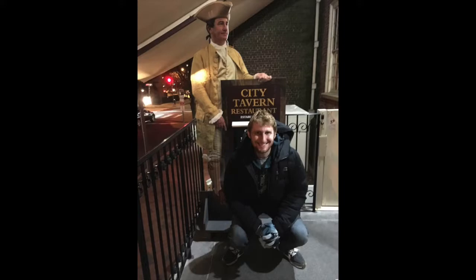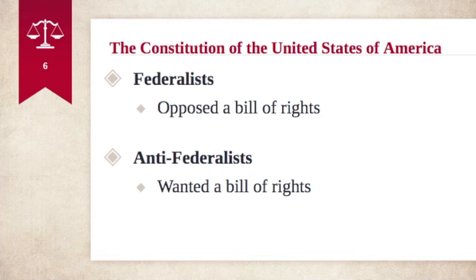The Constitution was a major accomplishment; however, there were two things that it lacked that created a heated debate lasting for several years after the Constitution was originally written. The Constitution lacked specific guarantees of personal liberty, and it also lacked specific limits on government power. This created a very tense debate between two different groups. One of those groups is what we call the Federalists, who essentially believed that the Constitution was fine the way that it was and that adding a Bill of Rights was not necessary. The Federalists opposed adding a Bill of Rights. We also have the Anti-Federalists, who wanted to add a Bill of Rights to the Constitution.